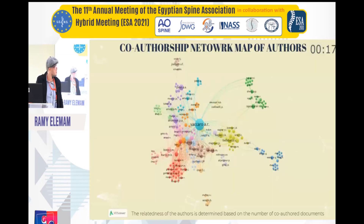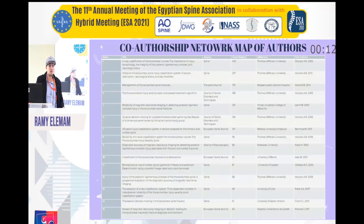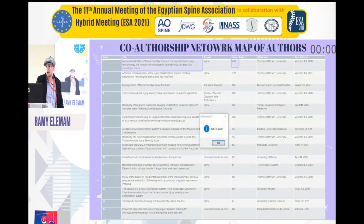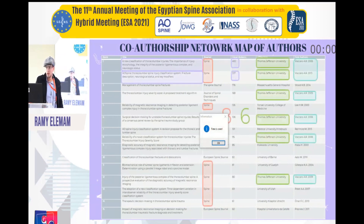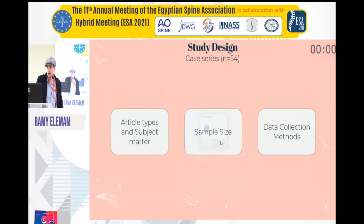This is a co-authorship network map of authors. Due to time constraints I cannot elaborate further. This is a list of the 15 most cited articles, with the TLICS classification coming in first place, followed by the AO classification.